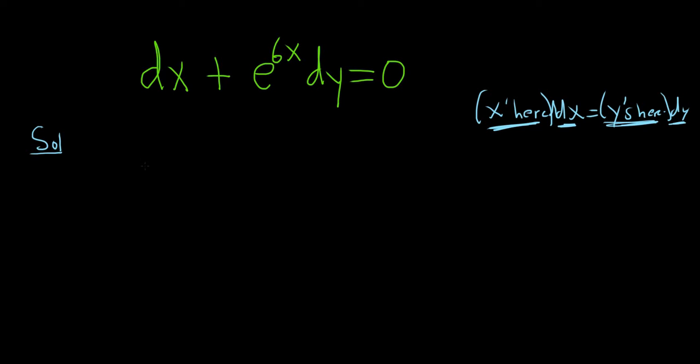So maybe start by subtracting dx. So we will have e to the 6x dy equals negative dx.